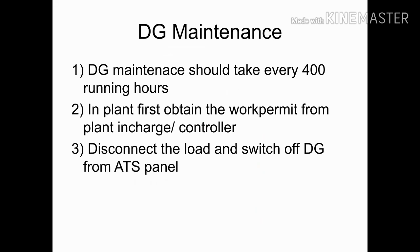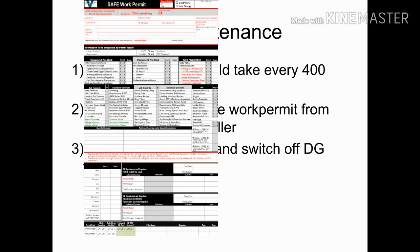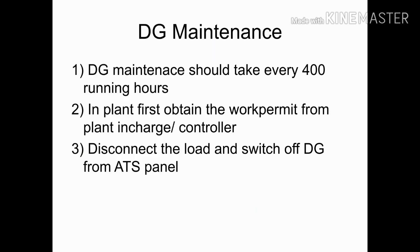If the diesel generator is installed in a refinery, before taking it for maintenance we need to obtain permission from the plant in charge or controller. The technician obtains a work permit from the plant in charge or controller, and then starts the DG maintenance process. See this picture — this is a sample of a work permit system.